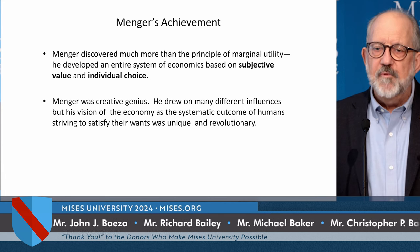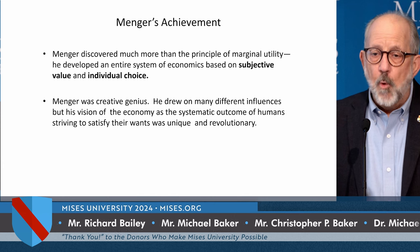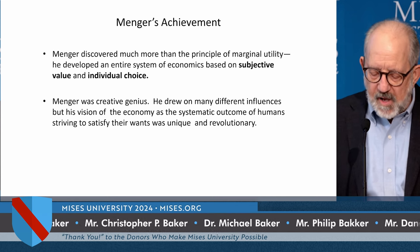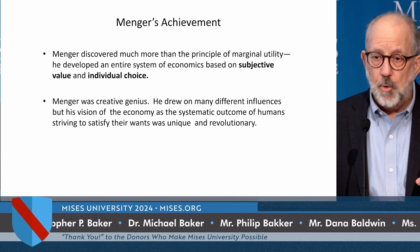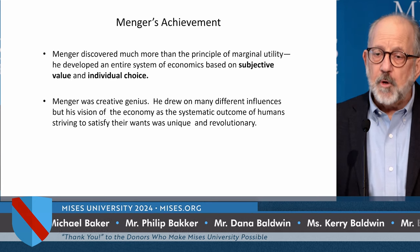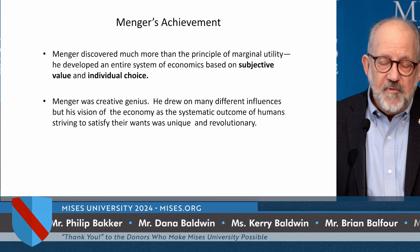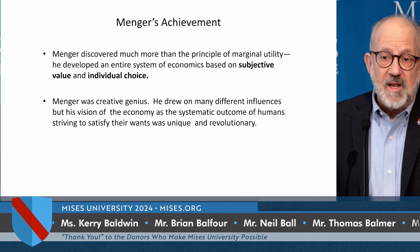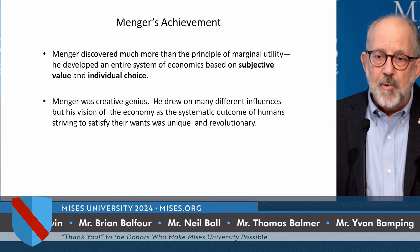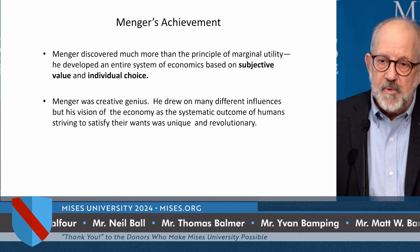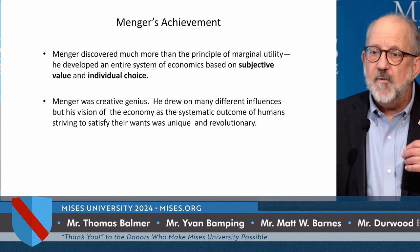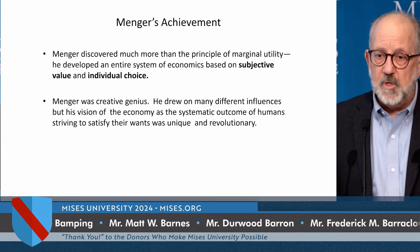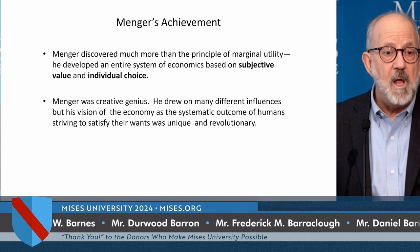This is where things get confused. Menger didn't just discover marginal utility. He discovered much more — something very different from what Jevons and Walras went on to develop as their economics. Menger developed really the whole system of economics, and he showed that it was based on subjective value and individual choice based on this principle of marginal utility. Before he wrote this view of the economy as implications of all these different people choosing what is most important to them and striving to satisfy their wants, that didn't exist. There were predecessors who talked about value being subjective, but they never put together a whole system of economics like he did. Most good historians of thought recognize Menger's achievement.